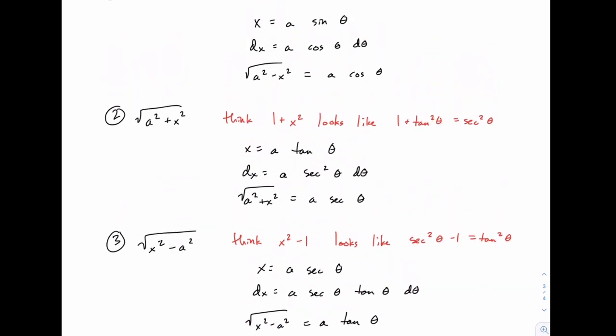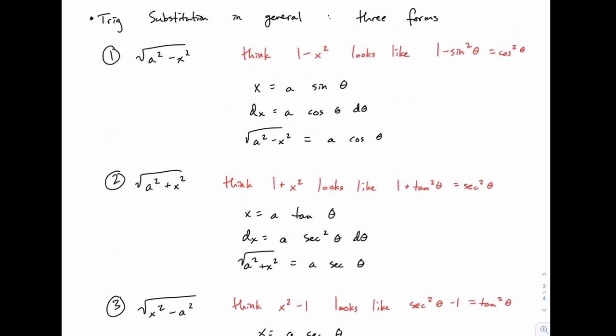So again, don't bother memorizing these three forms and the substitution for each case, but just remember that when you see the square root of x squared and a constant either being added or subtracted, you're either going to use sine, tangent, or secant, and just think about which one will simplify with the right Pythagorean identity. So think carefully through that, and then once you pick the right one, then dx and the square root follow predictably, and then you can make your substitution, and your integral will either be powers of sine and cosine, or powers of secant and tangent, and you know how to handle each of those based on what we did in the last unit.